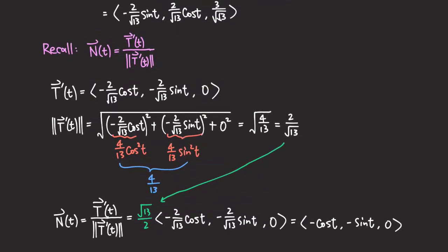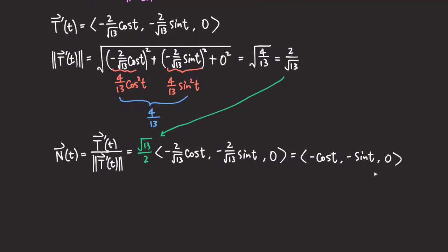One thing to point out: N is actually pointing in the same direction as T prime, because when we divide by its own magnitude we are not changing the direction — magnitude is a positive quantity. So because they point in the same direction and N is a unit vector, we know those constants must be turned into 1, and this is really just a trick to speed up the calculation.